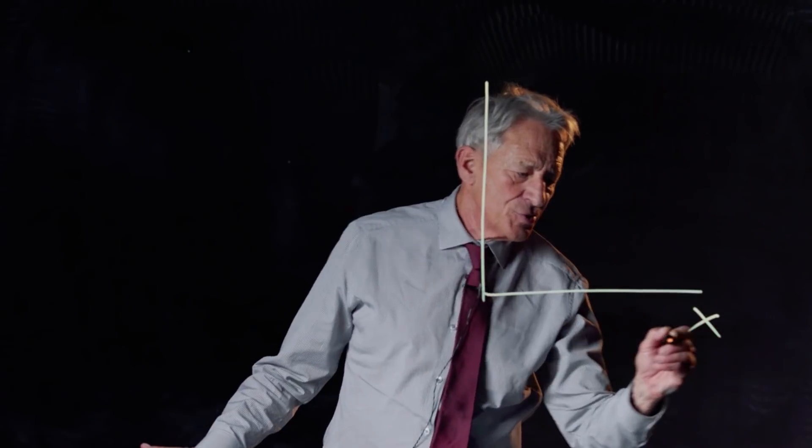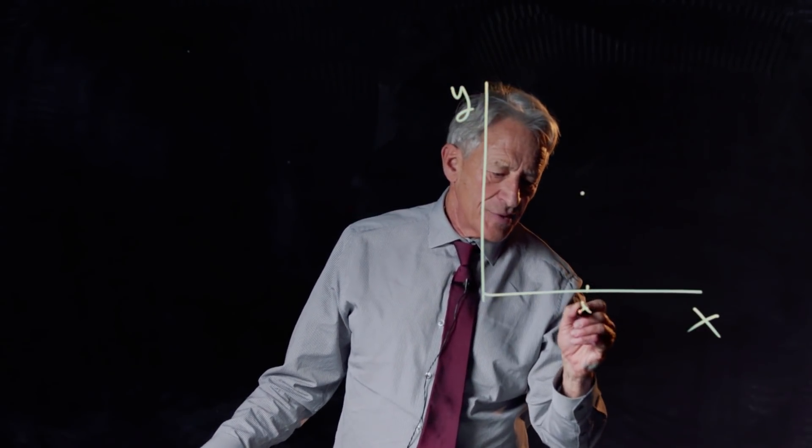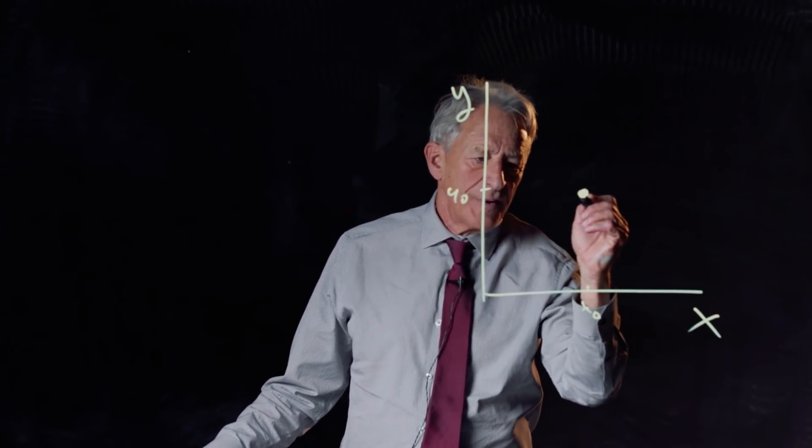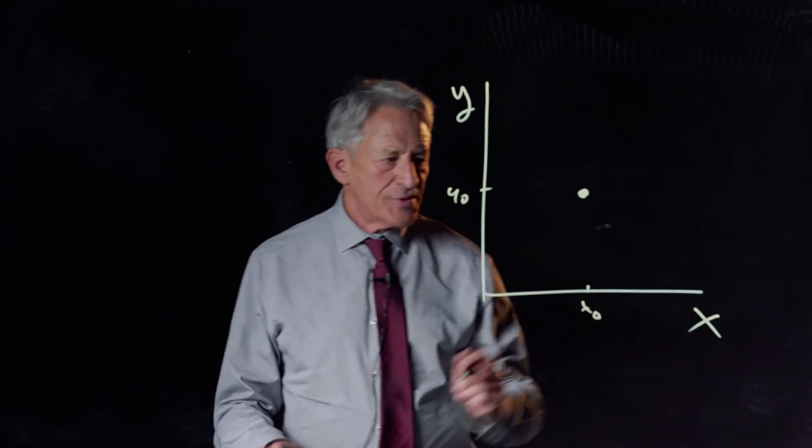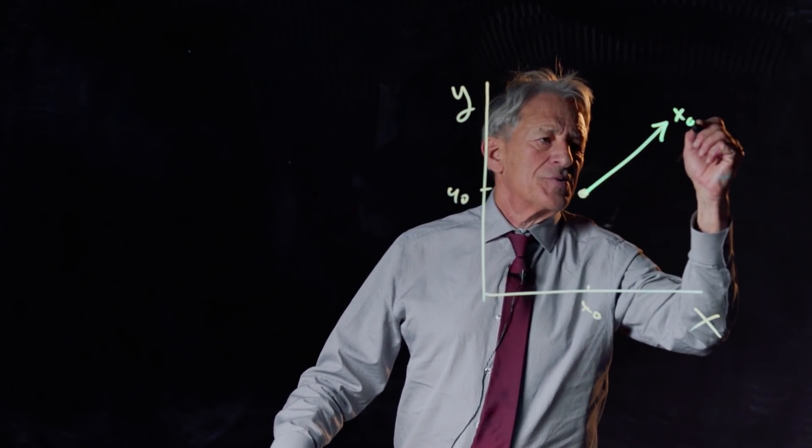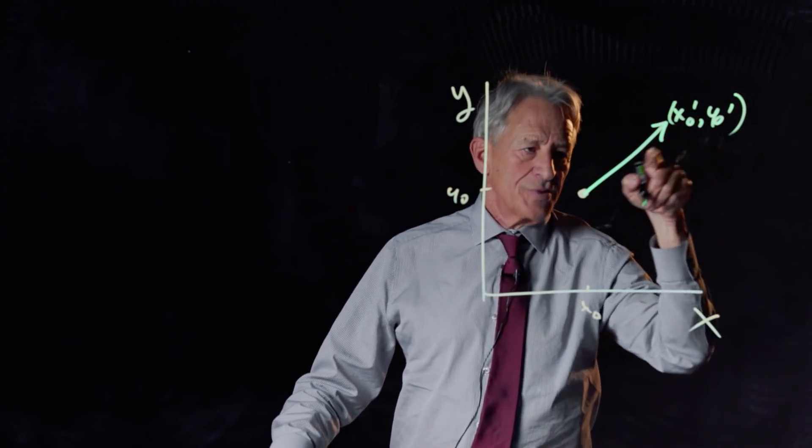So let's draw our state space, as usual, and let's take the point x0, y0, which is right there, and let's consider the change vector x0 prime, y0 prime, which is that.